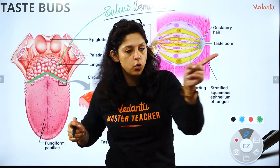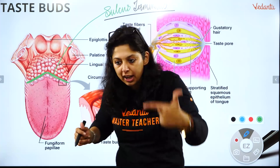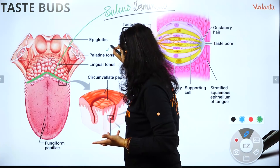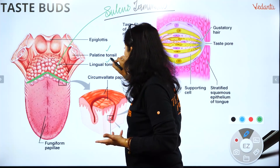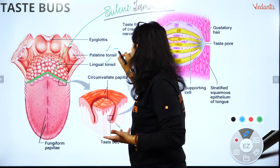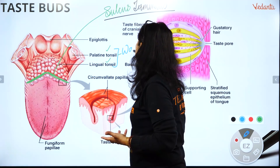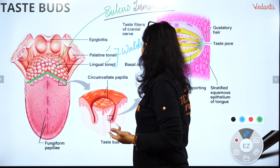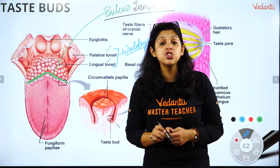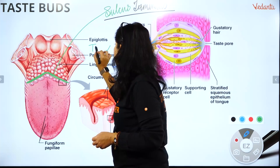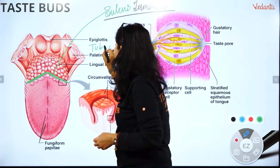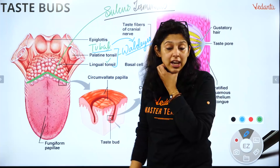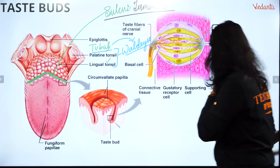After the sulcus terminalis, the tonsils at the back — palatine tonsil, lingual tonsil — are all part of Waldeyer's ring, which is an MCQ point. At the entry point of the throat, palatine tonsil, lingual tonsil, and tubal tonsil are all part of Waldeyer's ring.